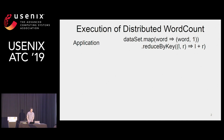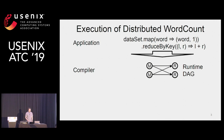Let's think about the execution of a distributed word count. This application is expressed using a high-level programming model. We map each word to a pair of words and a count of one, and for each word, we sum up the count. This application will be converted to a runtime directed acyclic graph, or a DAG, by a compiler. The map function will be copied to the map vertices, and the reduce function will be copied to the reduce vertices, and the data dependencies will be specified by the edges.